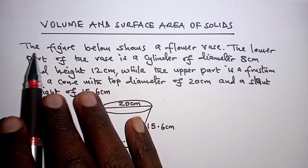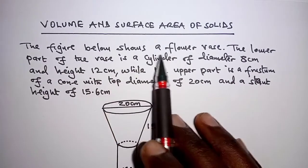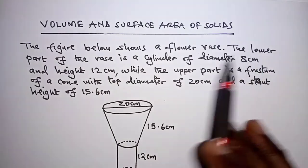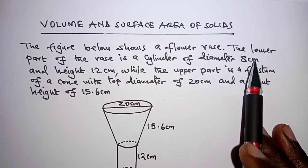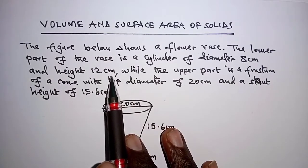So the question we have here is, the figure below shows a flower vase. The lower part of the vase is a cylinder of diameter 8 cm and height 12 cm.